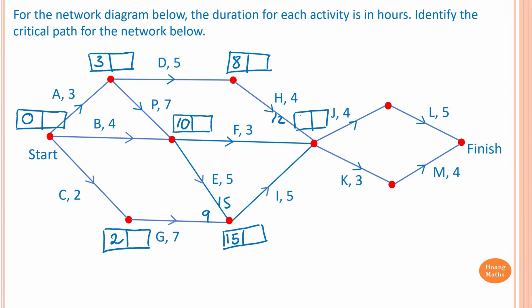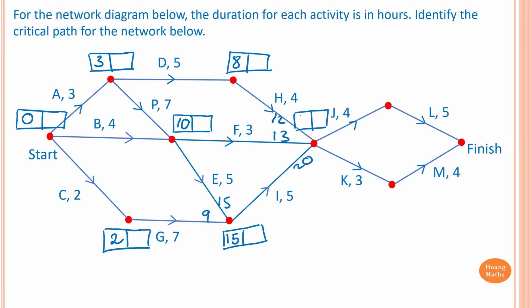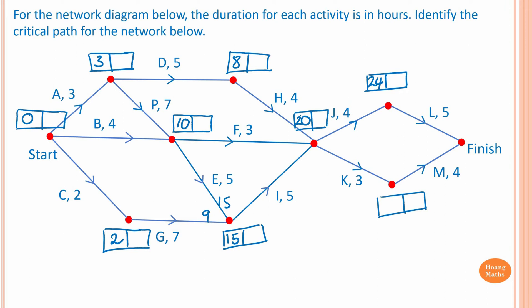Three plus ten is thirteen, and five plus fifteen is twenty. The largest value is twenty, so we write twenty down. To start on activity L, the earliest starting time is four plus twenty which is twenty-four. To start on activity M: three plus twenty is twenty-three.